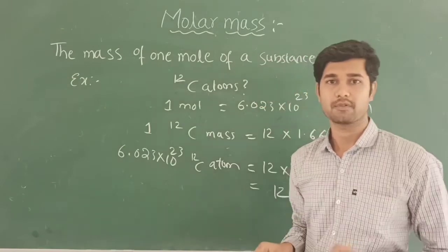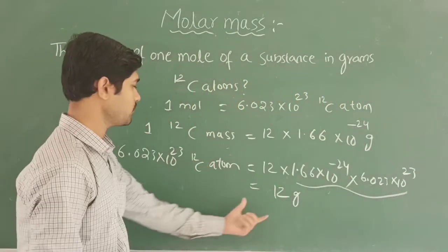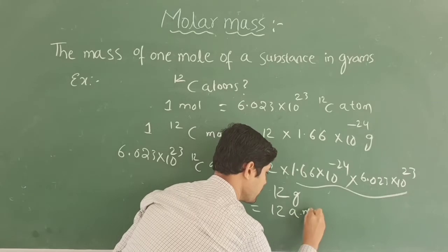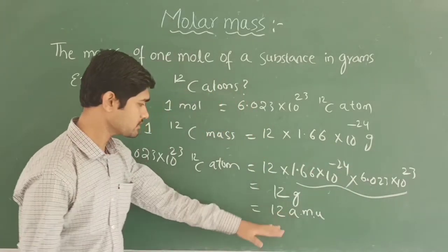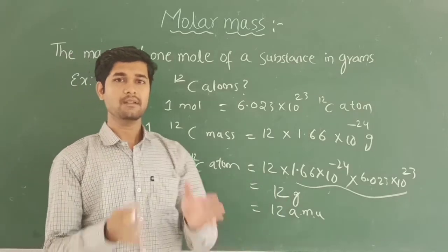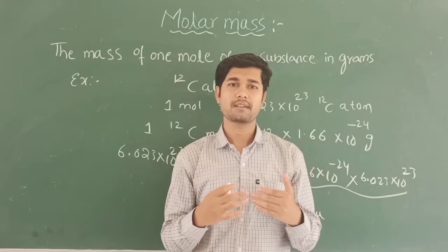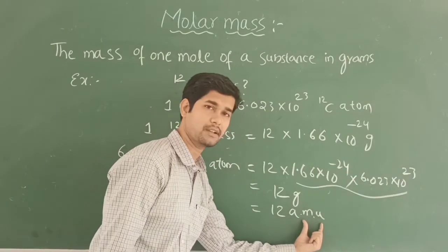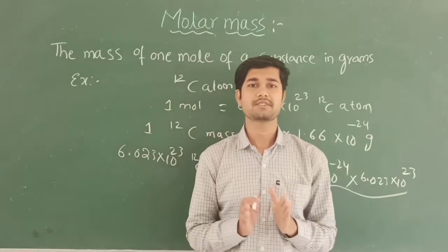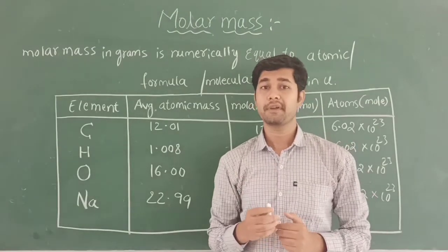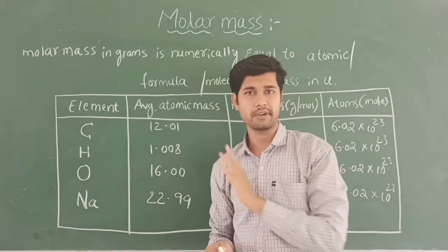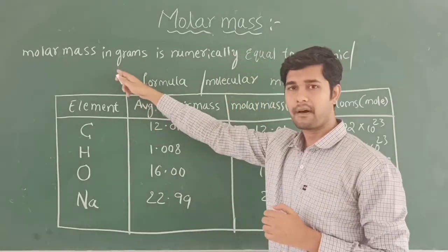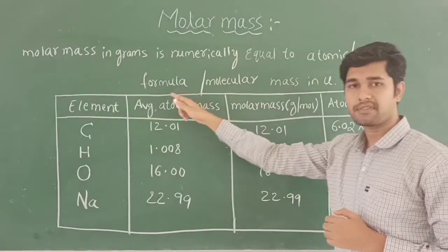The atomic mass of carbon is 12 amu (atomic mass unit), while the molar mass of carbon is 12 grams. The number is the same, but the scales are different — atomic mass uses atomic mass units and molar mass uses grams. So we conclude that molar mass in grams is numerically equal to atomic mass or molecular mass in amu.